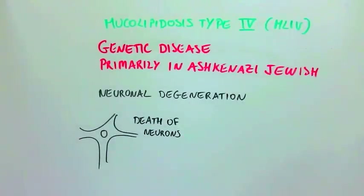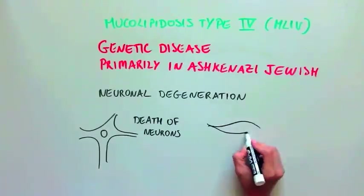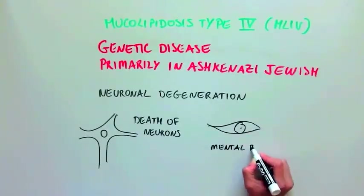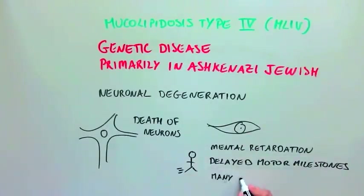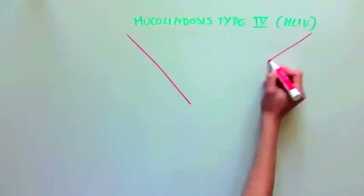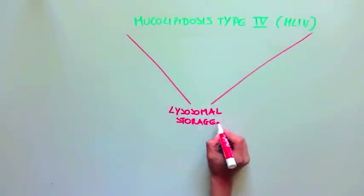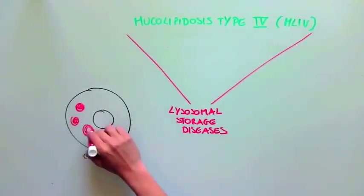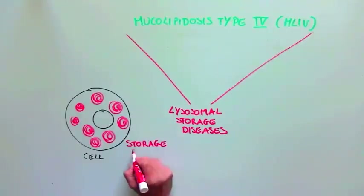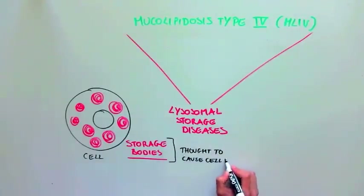ML4 is very debilitating, and patients with this disease suffer from visual impairments, mental retardation, and delayed motor milestones, among many other symptoms, which means many of them are unfortunately wheelchair-bound. ML4 is part of a group of diseases called lysosomal storage disorders, which are all characterized by accumulation of material inside cells that we call storage bodies. It is thought that the storage bodies are causing the death of the neurons.